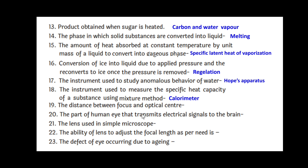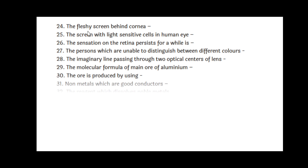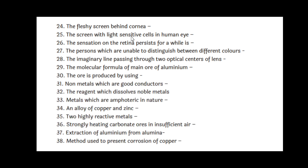The distance between the focus and the optical center is the focal length. The part of the human eye that transmits electrical signals to the brain is the optic nerve. The lens used in a simple microscope is the convex lens. The ability of the lens to adjust the focal length as per need is the power of accommodation. The defect of the eye occurring due to aging is presbyopia. The fleshy screen behind the cornea is the iris. The screen with light-sensitive cells in the human eye is the retina. The sensation on the retina that persists for a while is called persistence of vision.